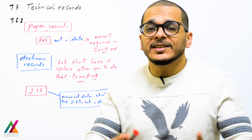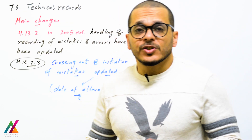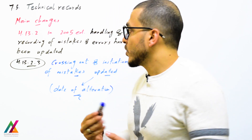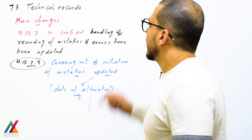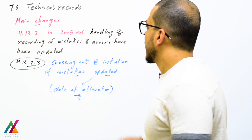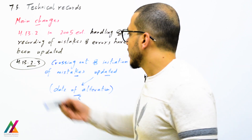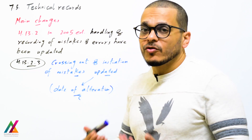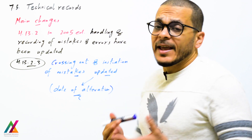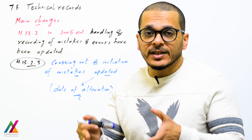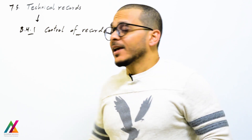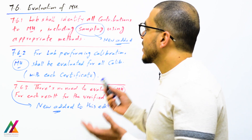The main changes from the 2005 edition: clause 4.13.2, handling and recording of mistakes and errors, has been updated. The crossing out and initialing of mistakes has been updated — erasing is no longer allowed. The date of alteration shall now also be included. Additionally, requirements for technical records will be explained again in clause 8.4.1 control of records, and we now have clause 7.6 on evaluation of measurement uncertainty.